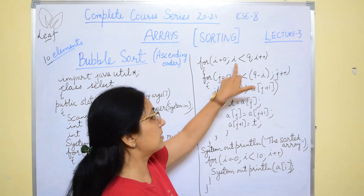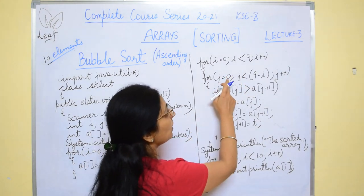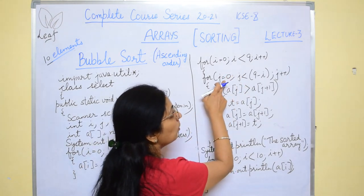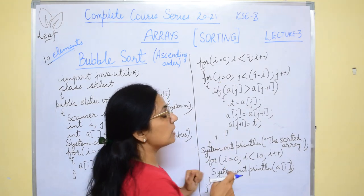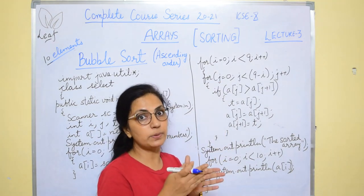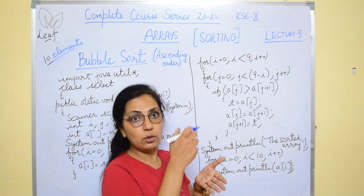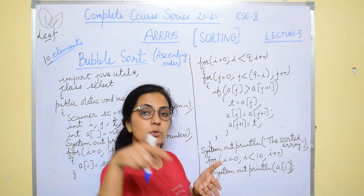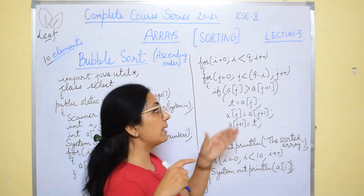And here the inner loop will again start from 0 every time in bubble sorting, because we are doing the comparison for 0-1, 1-2, 2-3, like this, in pairs of adjacent elements. In ascending order, for the first time the largest element is shifted towards the last subscript.